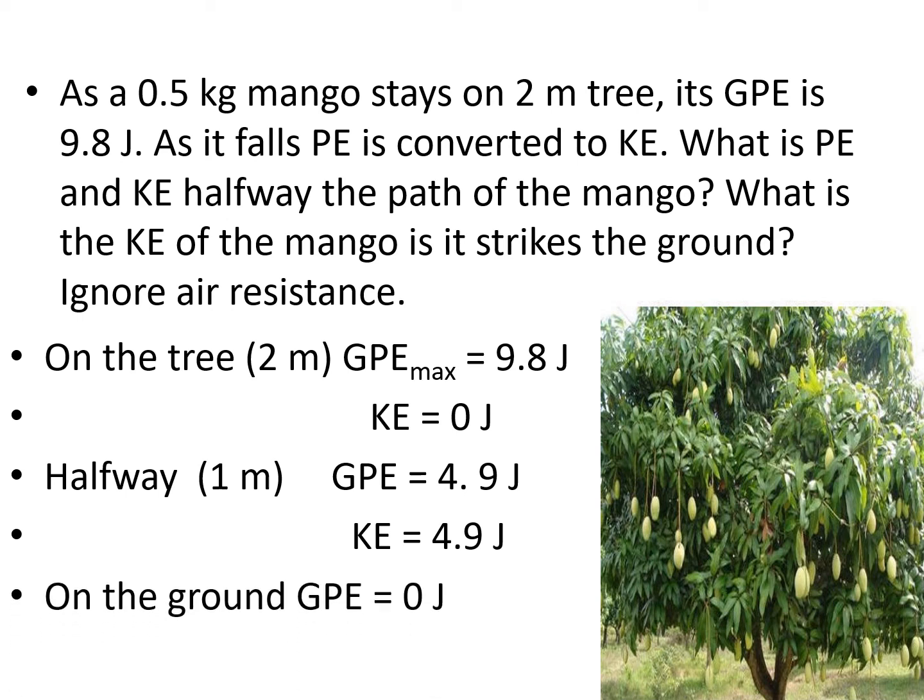On the ground, where the height is 0, the GPE is 0, while the KE will gain the maximum potential energy, which is 9.8 joules.